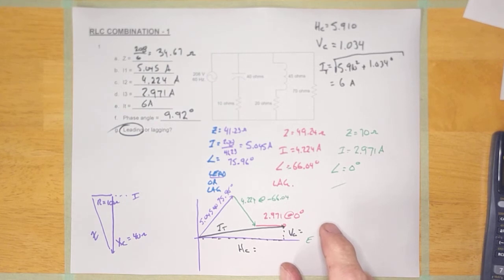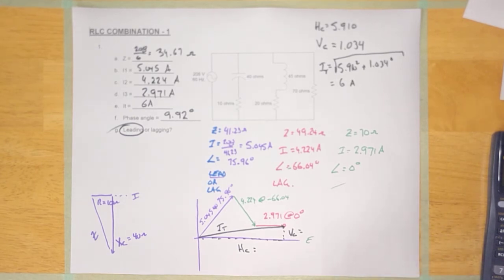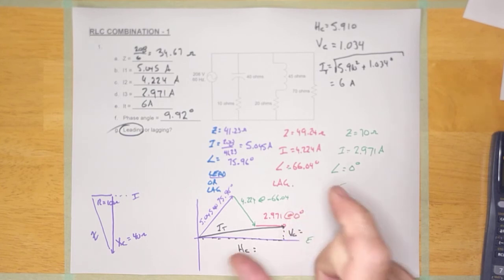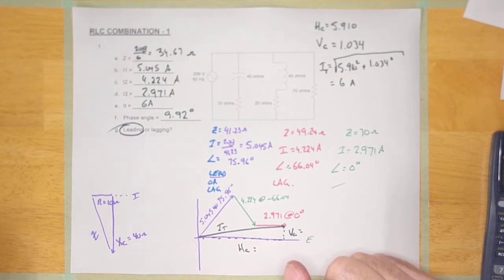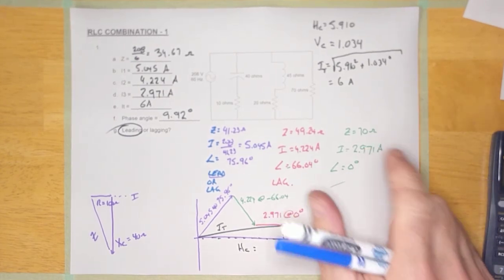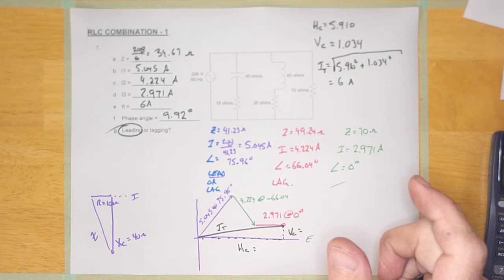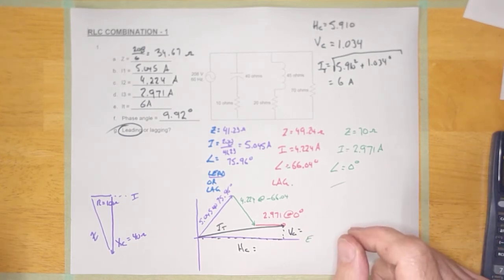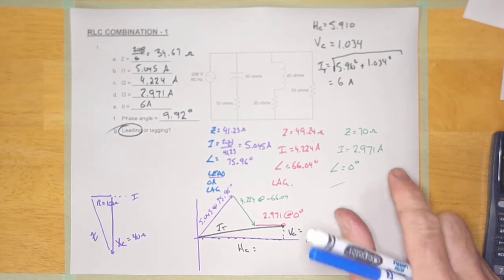Once you've done the combination circuits homework, there's another handout — Unit 2, Handout 3C — with even more combination circuits if you want. Then there's Unit 2, Handout 4, which I highly recommend you try. Now that we've done series, parallel, and combination circuits and practiced them all, it's really important that we can switch between them.